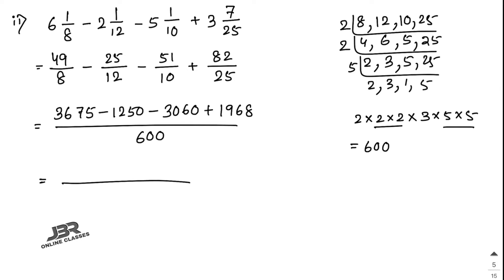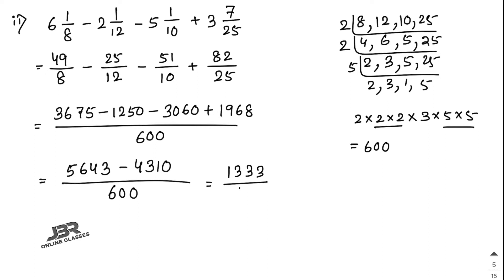Add the positive numbers: 1968 plus 3675 equals 5643. The two negative numbers are 1250 and 3060, so minus 1250 plus 3060 equals minus 4310. Now 5643 minus 4310 equals 1333, giving 1333/600. Converting to a mixed fraction, the answer is 2 and 133/600.